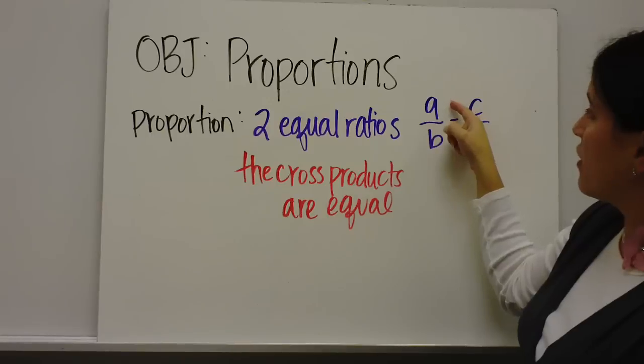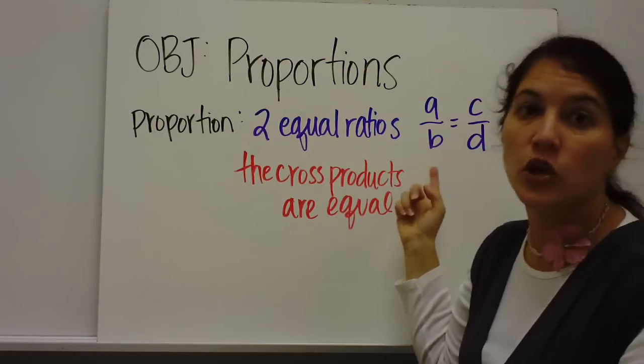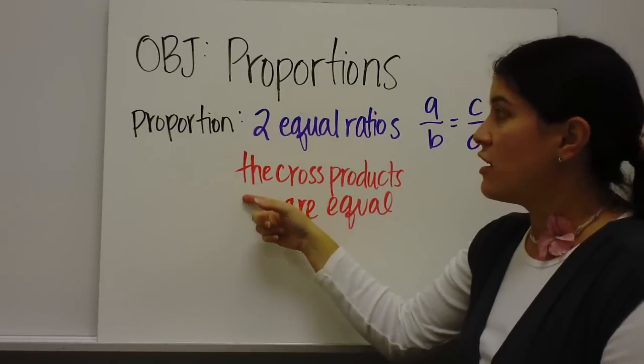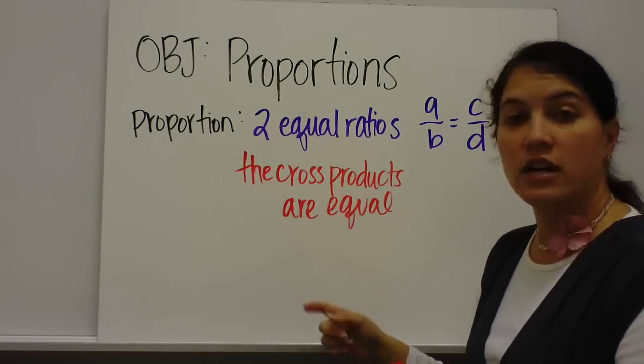A proportion, make sure you get this down, a proportion is two equal ratios. For example, A over B is equal to C over D. So those are two ratios and they are equal to each other.